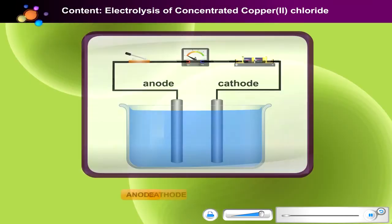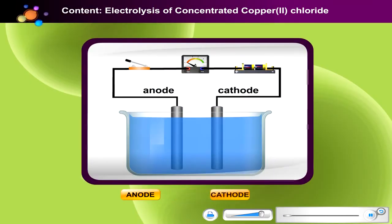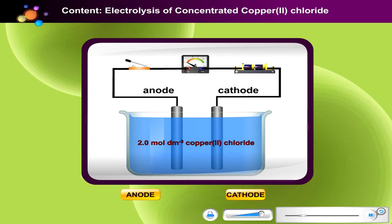We have learned that the position of ions in the electrolyte can affect the selection of ions to be discharged during electrolysis. Now, let's take a look at how the concentration of ions in the electrolyte affects electrolysis. This is a concentrated solution of copper 2 chloride.